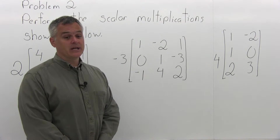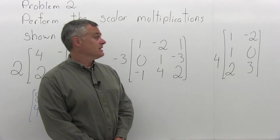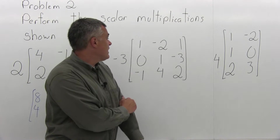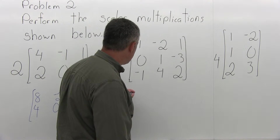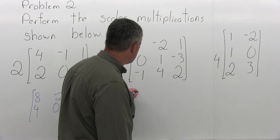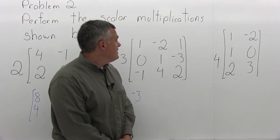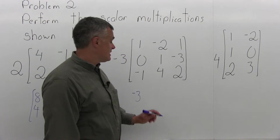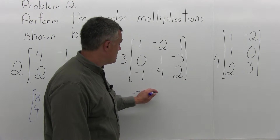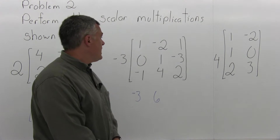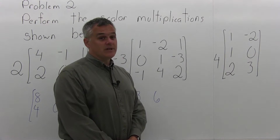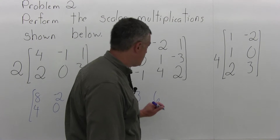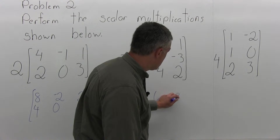So that means multiply negative 3 times every number inside the matrix. In the upper left you have a 1, which becomes negative 3 times 1, which is negative 3. In the top row middle position you have a negative 2, so that's negative 3 times negative 2, which would be positive 6. And in the upper right position you have a positive 1, so it becomes negative 3 times positive 1, which is negative 3.